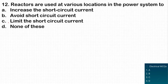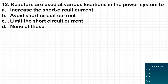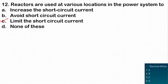The next question: reactors are used at various locations in the power system to do what — increase, avert, or limit the short circuit current? These reactors are connected in series with the transmission line, which increases the impedance of the line. By increasing impedance, it reduces the short circuit current. So reactors are used to limit the short circuit current, and option C is the correct answer.